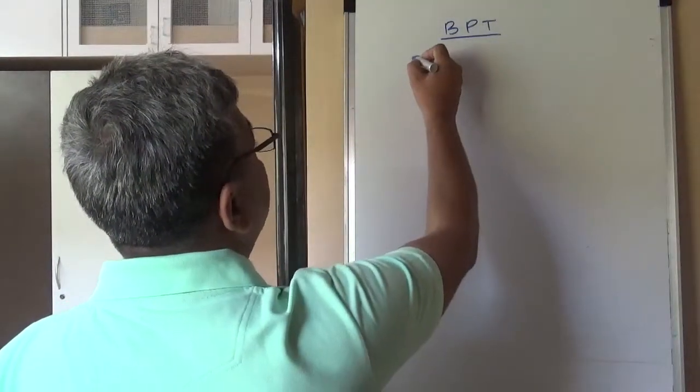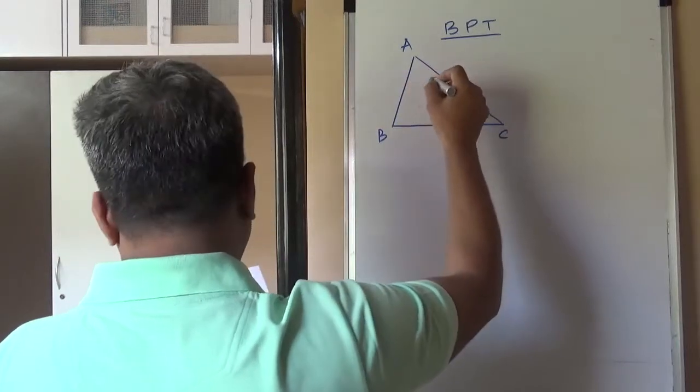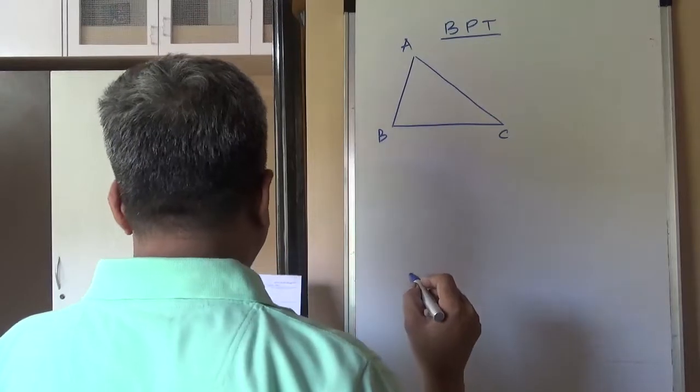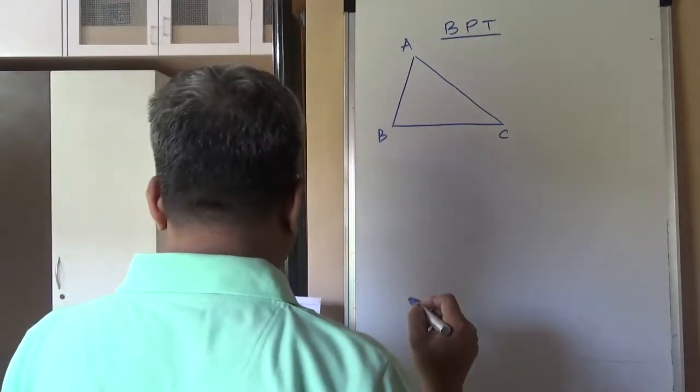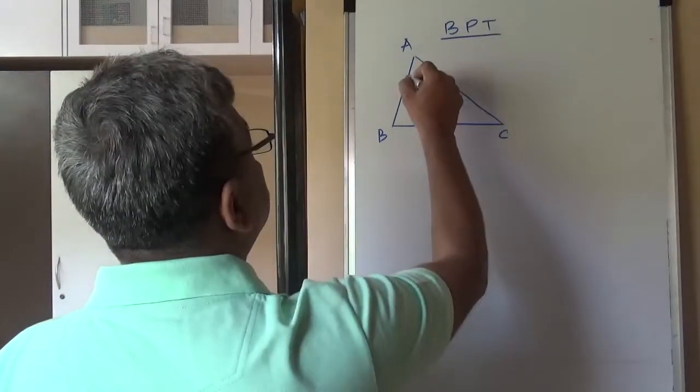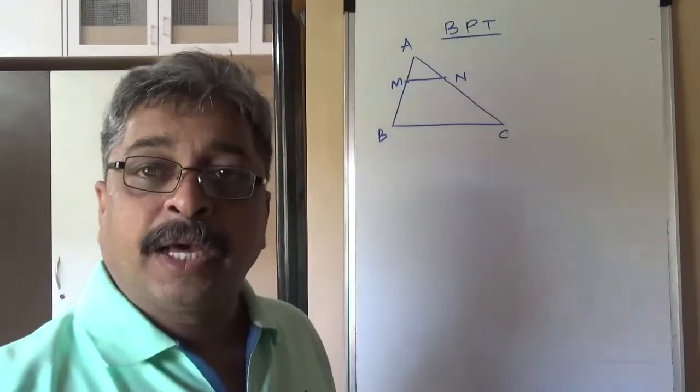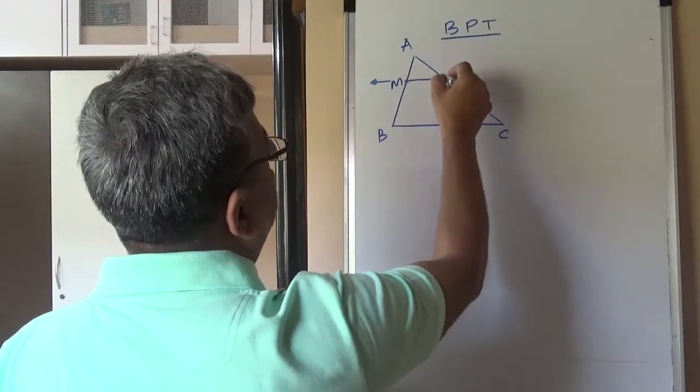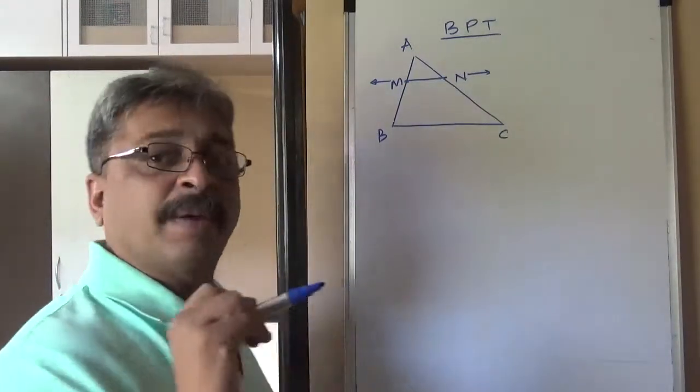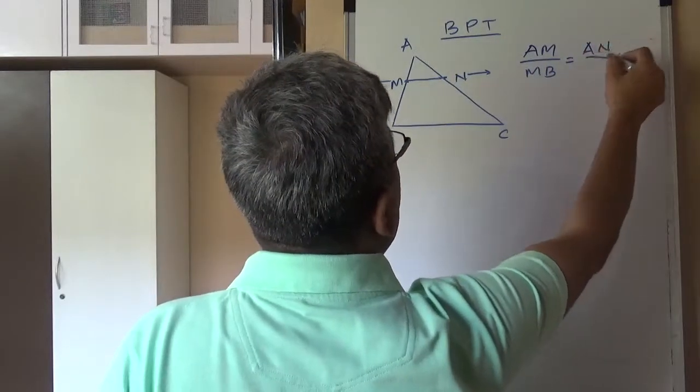Basically, basic proportionality theorem says if you have a triangle ABC and if you have points M and N such that points M and N are taken such that if you draw a line parallel through any point M, it intersects AC at N, line MN is parallel to BC. If this happens,